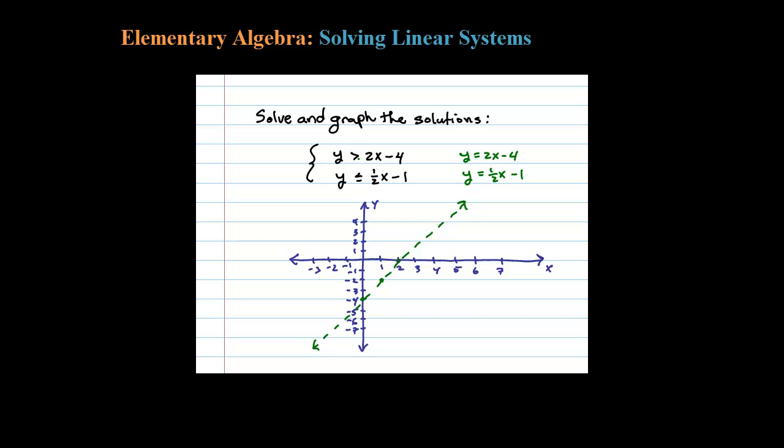Now we want to graph all the ordered pairs that satisfy this first inequality. If you choose a test point, say (0, 0), zero is certainly greater than negative four. So I could shade in all of the solutions for the first equation like that.